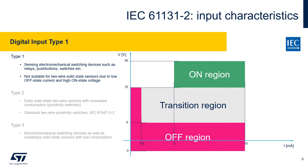Each characteristic type is suitable for a different kind of switching device. For instance, type 1 has been defined to suit ideally to electromechanical switching devices like relays, push buttons, or switches. It may not fit to two-wire solid-state sensors, because its transition region starts at quite low current, already at 0.5mA, and the on-region requires quite high voltage, at least 15V.